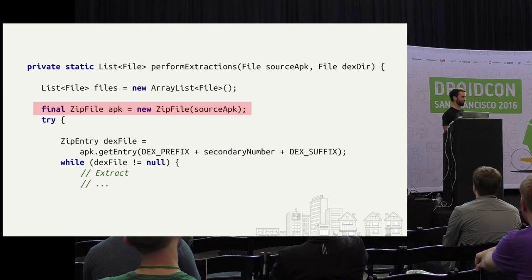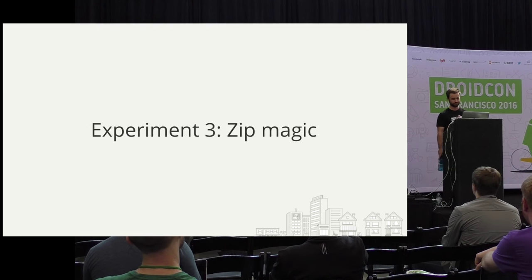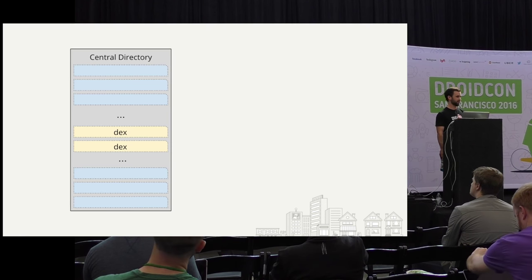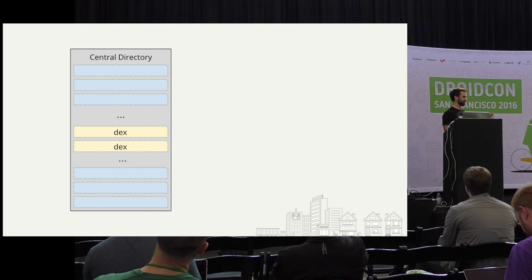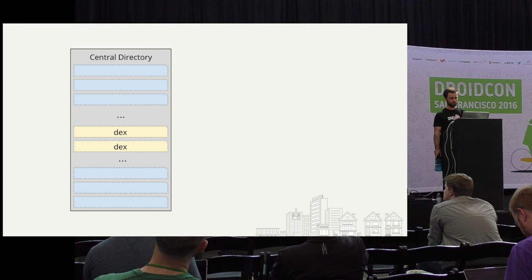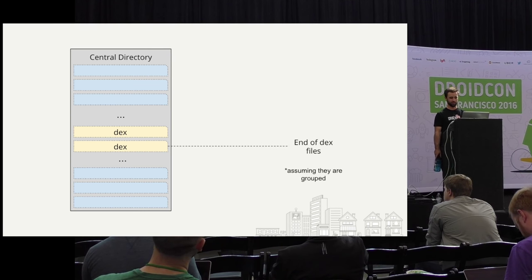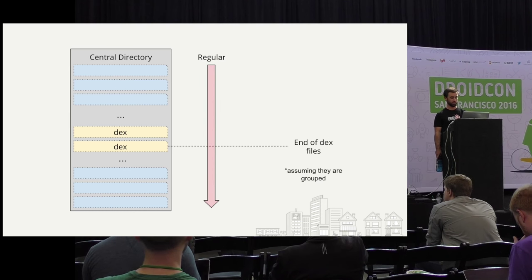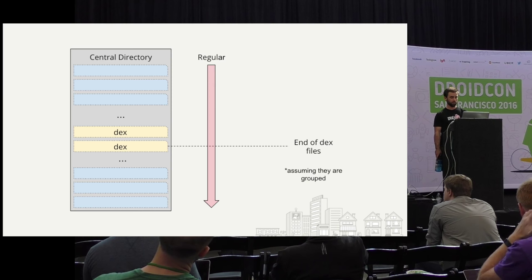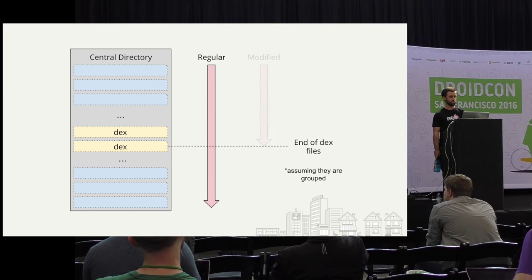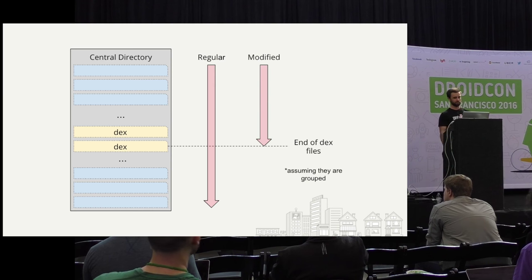So looking at the performExtractions method: first, we make a ZipFile representing the APK, then we go through and try to get a dex file, and while we keep getting dex files, we extract them and keep going. What's really interesting from a performance perspective is that pretty much the entire cost of first-start Multidexing is this casual ZipFile constructor right here. The reason is it's reading the entire central directory so you can access any file in there — but looking at what's going on, we don't really care about any of the other files, we only care about the one additional dex file. This seems like something we can improve.